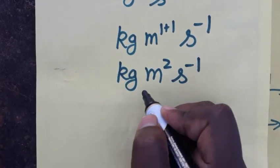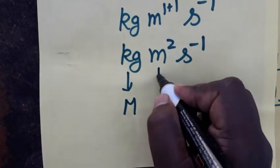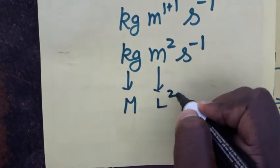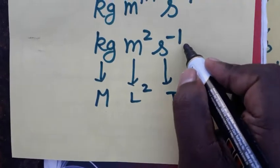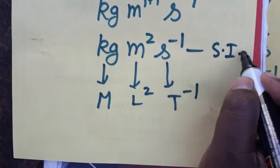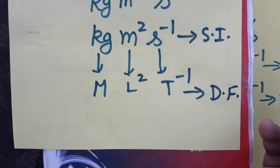It is the SI unit of angular momentum. And dimensional formula for mass will be M, length will be L, L power 2, and time will be T, T power minus 1. So it is the SI unit of angular momentum and it is the dimensional formula for angular momentum. Thank you.